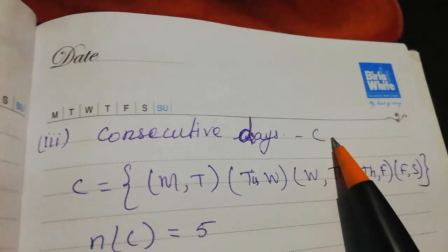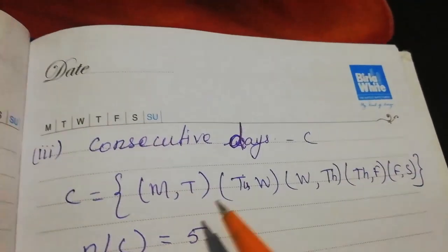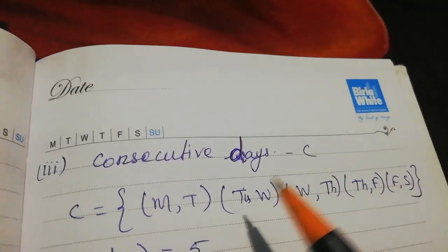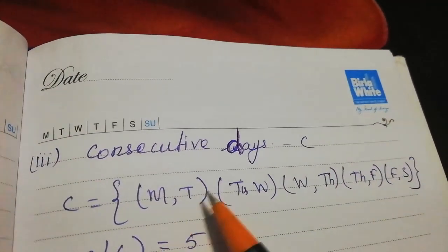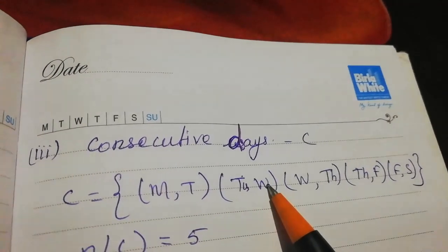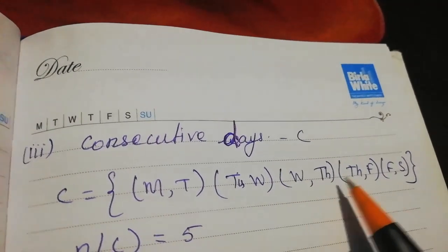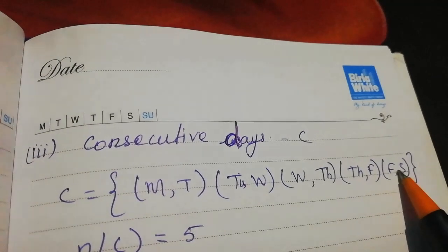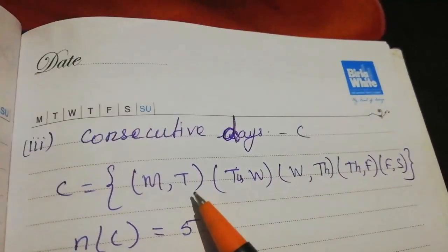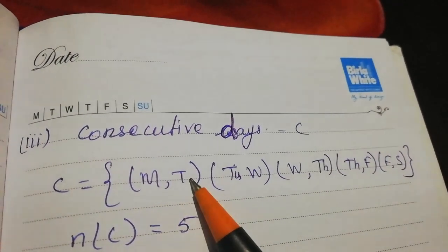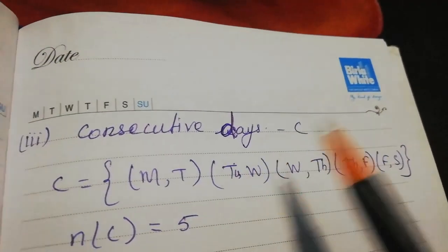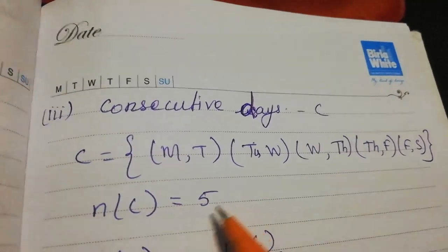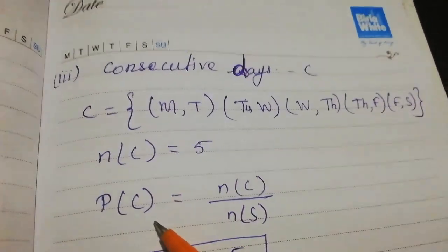For consecutive days, the pairs are: Monday-Tuesday, Tuesday-Wednesday, Wednesday-Thursday, Thursday-Friday. Friday would be followed by Saturday, but since we only consider weekdays, we count 4 consecutive day pairs. So N(C) = 4 and P(C) = 4/36.